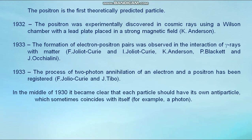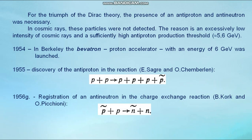In the mid-1930s, it became clear that each particle should have its own antiparticle, which sometimes coincides with itself, for example a photon. For the triumph of the Dirac theory, the presence of the antiproton and antineutron was necessary. In cosmic rays, these particles were not detected. The reason is an excessively low intensity of cosmic rays and a sufficiently high antiproton production threshold, approximately equals 5.6 giga electron volts.